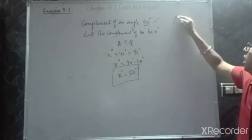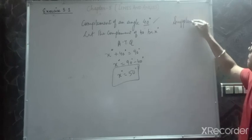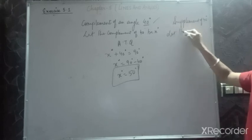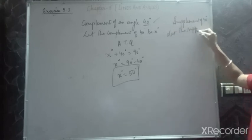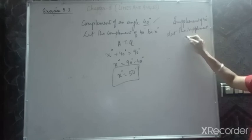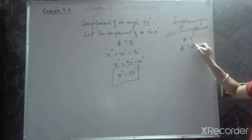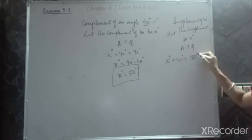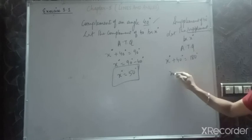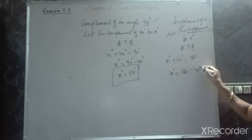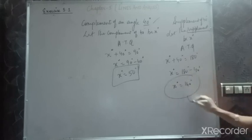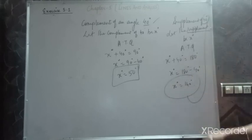From the same question, what is the supplement of 40°? Let the supplement be x°. According to the definition, x° + 40° = 180° because supplementary angles sum to 180°. Therefore x° = 140°. So the supplement of 40° is 140°.